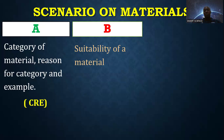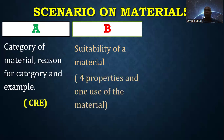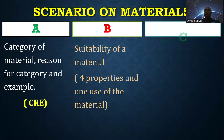Sometimes questions will talk about appropriateness — the ability of a material to perform a given function. Here we need four properties of that material and one use of any material of your choice. So if a scenario has more than one material, pick one, give its properties, and complete with one use.